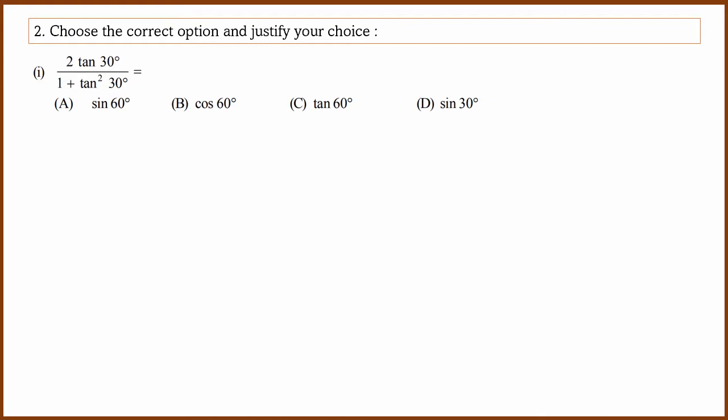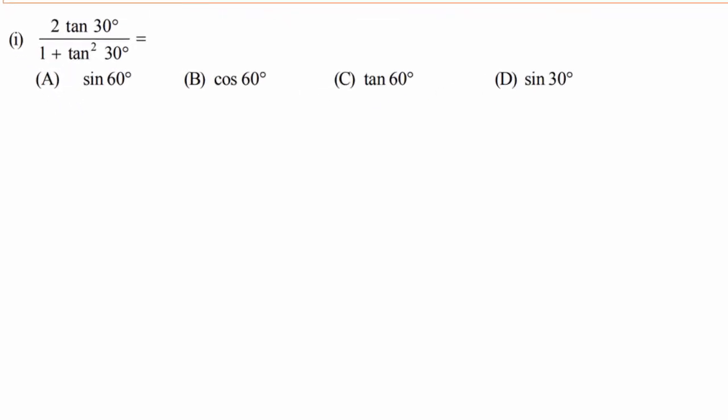Choose the correct option and justify your choice. In the first question, the expression is 2tan30 divided by 1 plus tan squared 30. The options are sin60, cos60, tan60, and sin30.